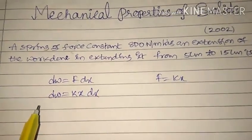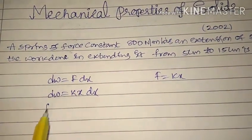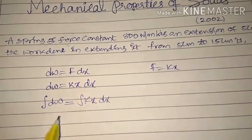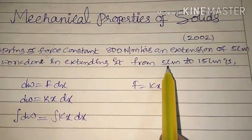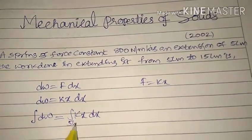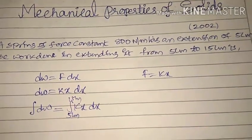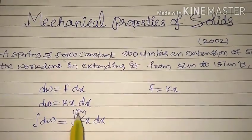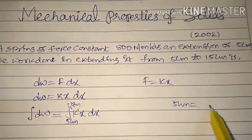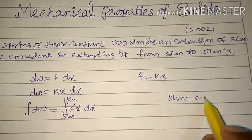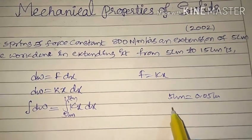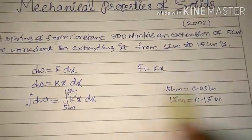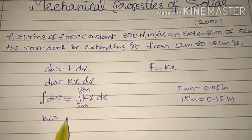To get the total work done, integrate both sides: W = integral of kx·dx from 5 centimeter to 15 centimeter. Since the units are Newton per meter, the centimeters must be converted to meters: 5 cm = 0.05 m and 15 cm = 0.15 m.